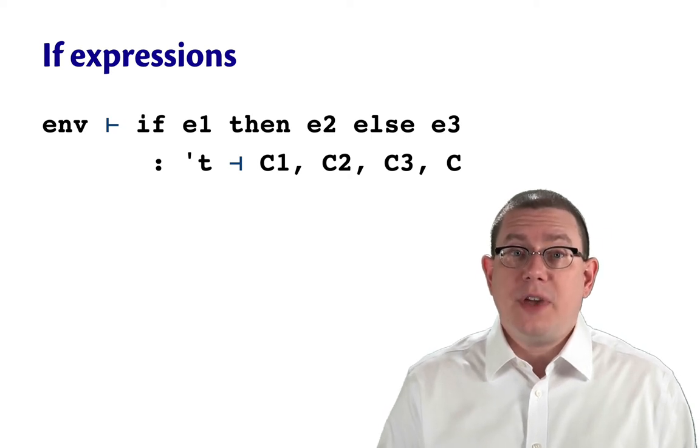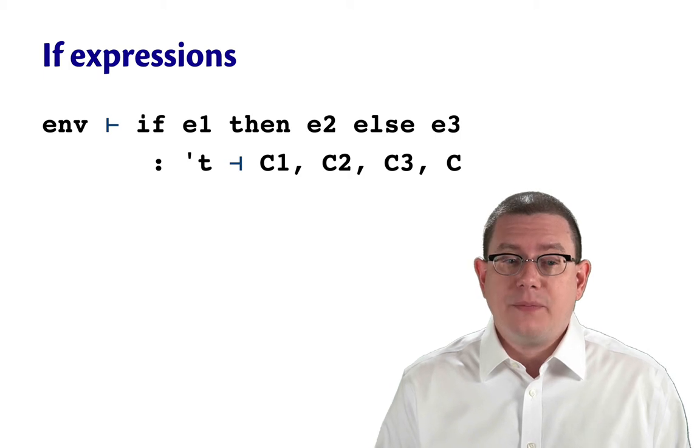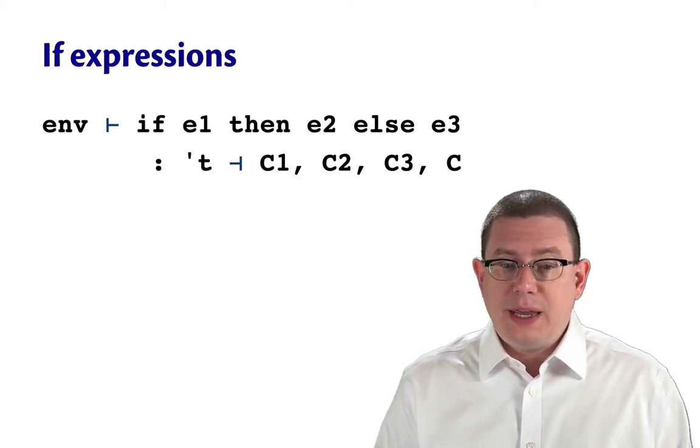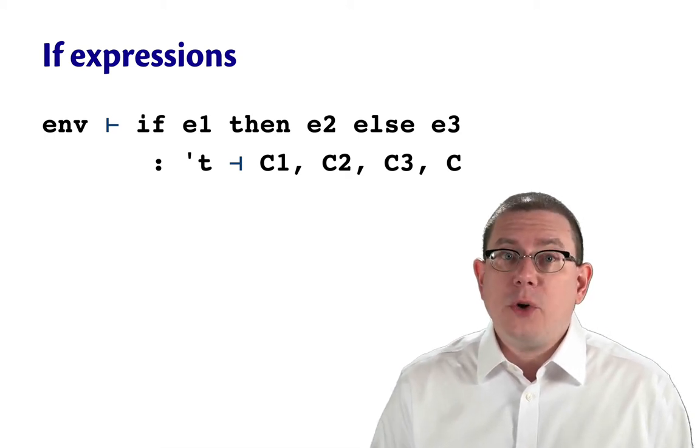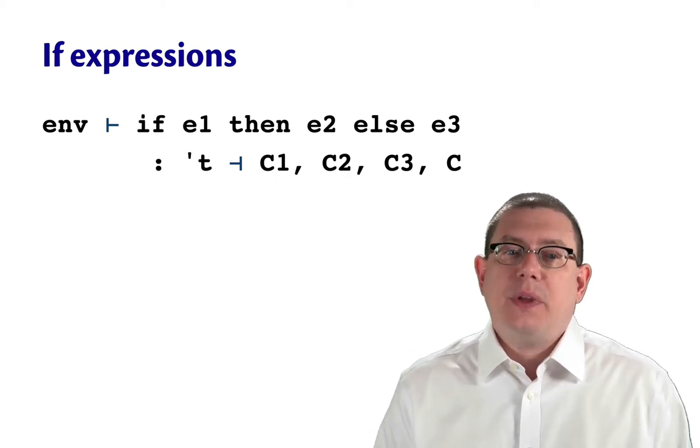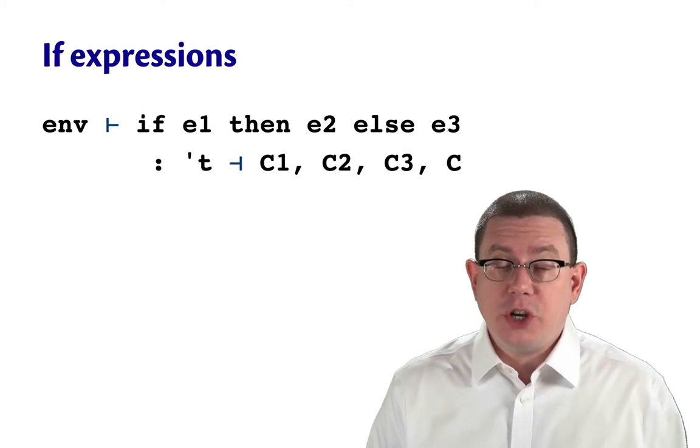How about type inference for if expressions? This is the first place where it's going to start to get a little complicated. We're inferring the type of if e1 then e2 else e3 in a static environment env. We're going to infer a type tau for this, and there's going to be a bunch of constraints involved. So this is the first time we've actually generated any constraints.